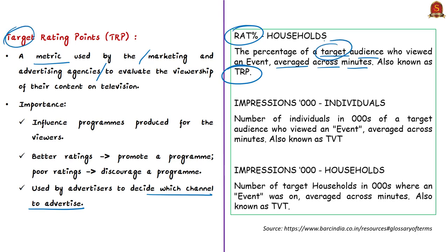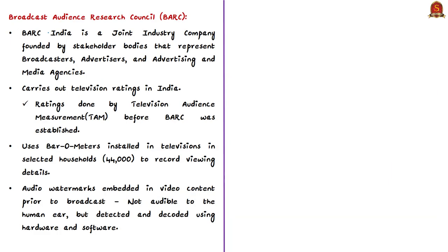From the year 2015, the term 'impressions' is more commonly used in place of TRP. These ratings influence programs produced by channels — better ratings promote a particular program while poor ratings discourage it. TRPs or beat impressions are the main currency for advertisers to decide on which channel to advertise. In India, these impressions are recorded by the Broadcast Audience Research Council, shortly called BARK.